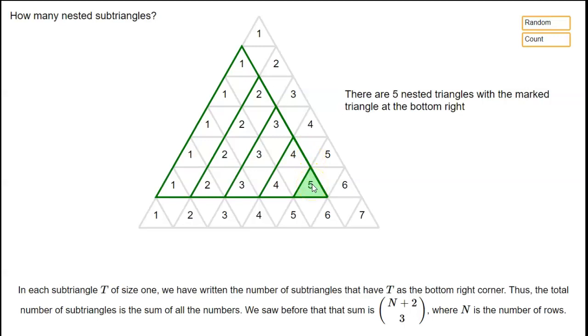But that's exactly what we were looking at in the last demonstration. There we showed that if you've got n rows then the total of all the numbers in this pattern we've got here is going to be n plus 2 choose 3. So that's going to be the answer here. If we have a big triangle like this with n rows then the total number of nested subtriangles is going to be n plus 2 choose 3.